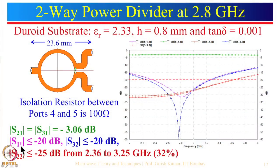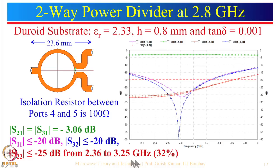S11 is well-matched over the band, S32 is shown, and S22 again is fairly large in bandwidth. The bandwidth obtained here for all parameters is from 2.36 to 3.25 GHz — that is about 32 percent, which is a fairly large bandwidth.